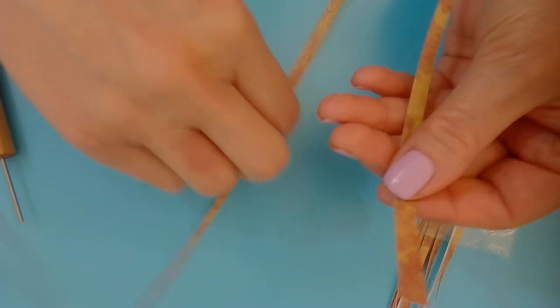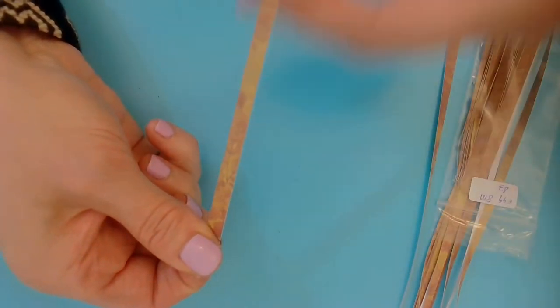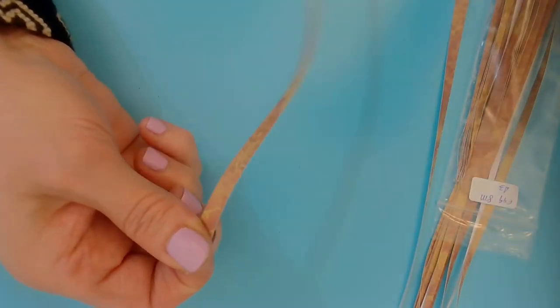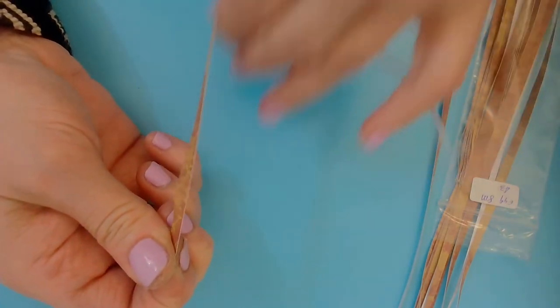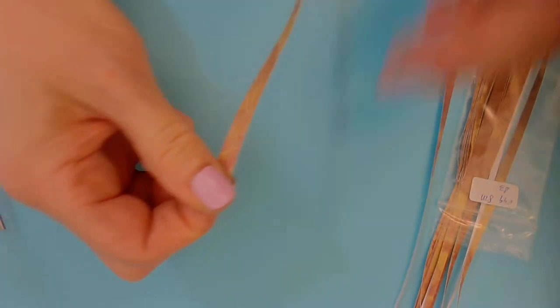So we want to condition our paper, which means to run our fingers through the paper, and this allows it to roll a little easier. See how it's curling? That's what you want to see.